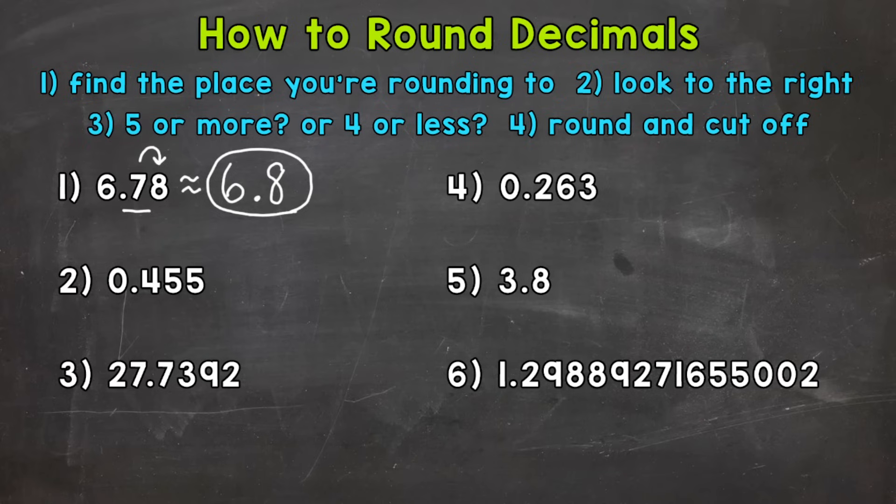Now I cut that decimal off after the tenths place. When we round decimals, we cut them off after the rounded place. We don't need to change everything to the right to a zero like we do with whole numbers. Zeros to the right of a decimal do not change the value of that decimal. So we can leave them off. So again, we can cut that decimal off after the rounded place. So 6 and 8 tenths, our final rounded answer.